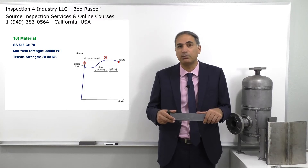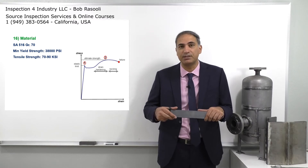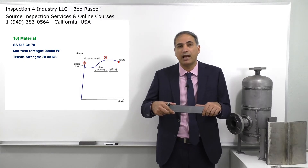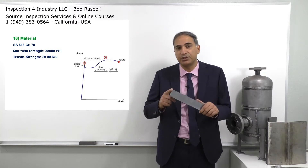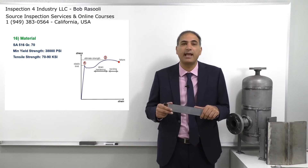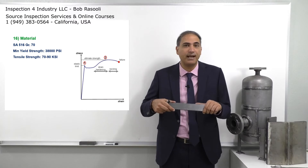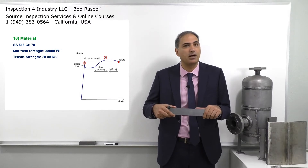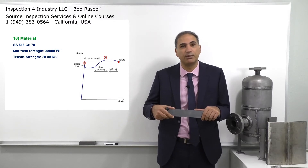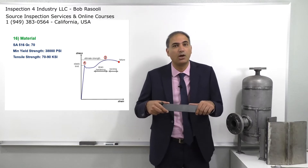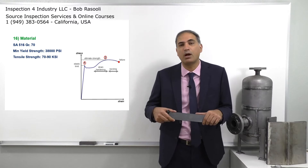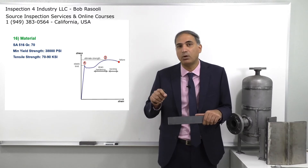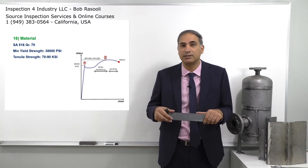Point number one is the yield strength. It means if I apply a load that passes point number one — which for this material is 38,000 psi — the material is not going to return to its original dimension. The deformation or increase in length will be permanent. That's why we call point number one the yield point or yield strength.